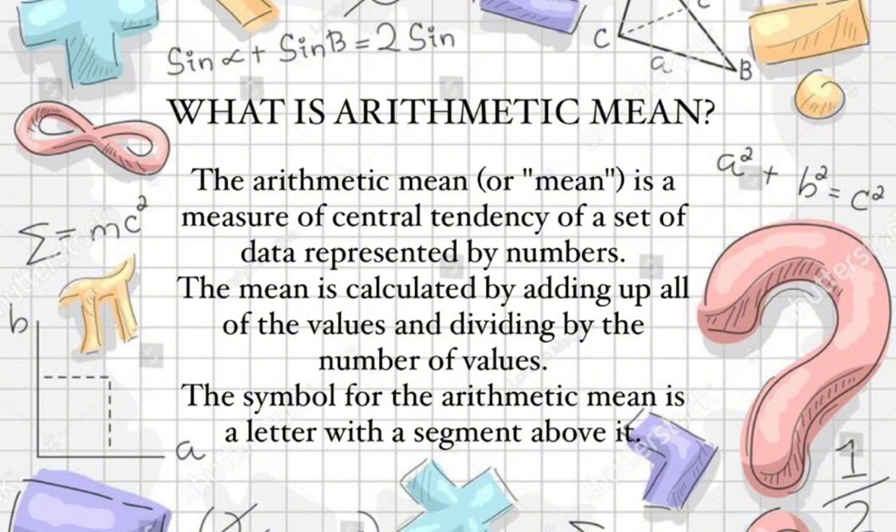Arithmetic mean or mean is a measure of central tendency of a set of data represented by numbers. The mean is calculated by adding up all the values and dividing by the numbers of values. The symbol for the arithmetic mean is a letter with a segment above it.